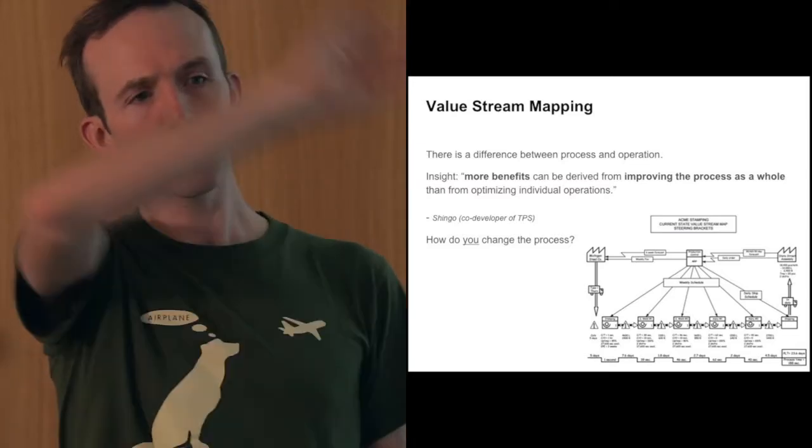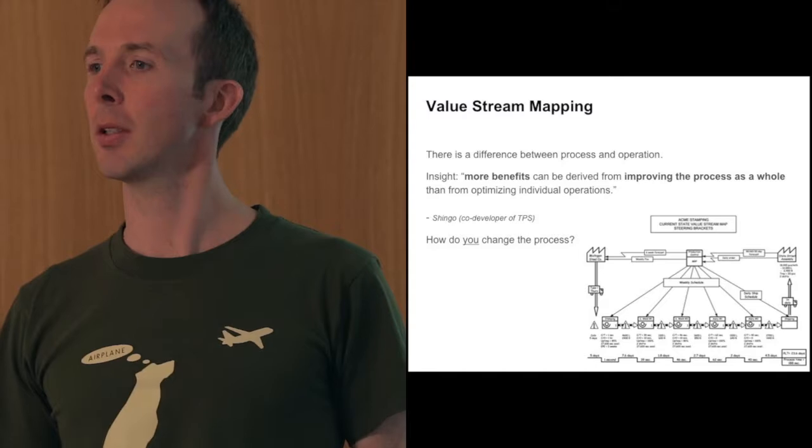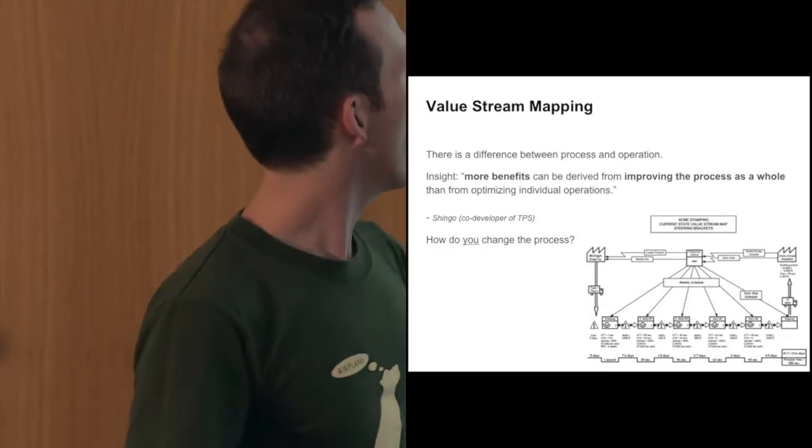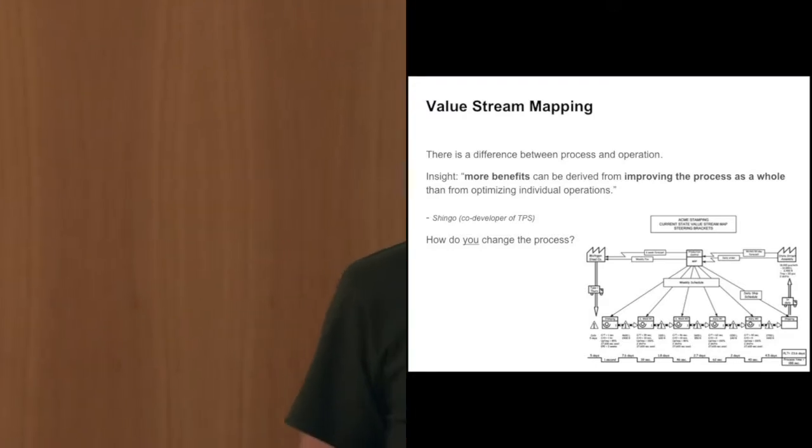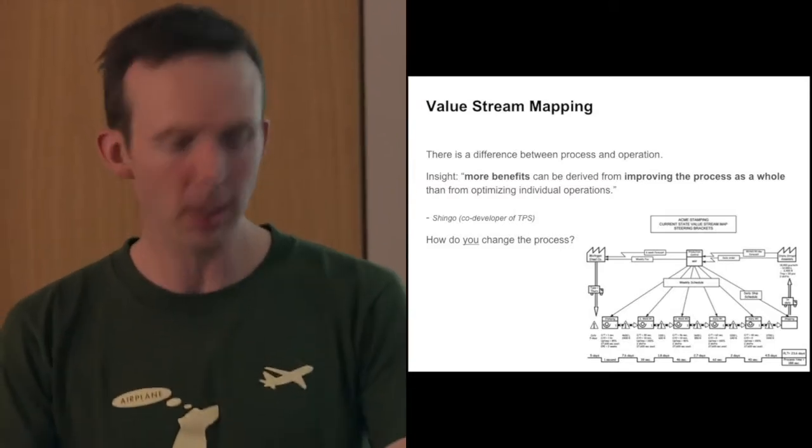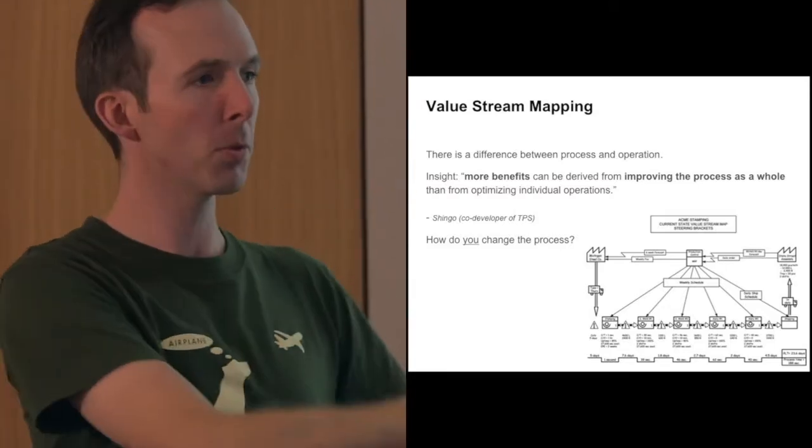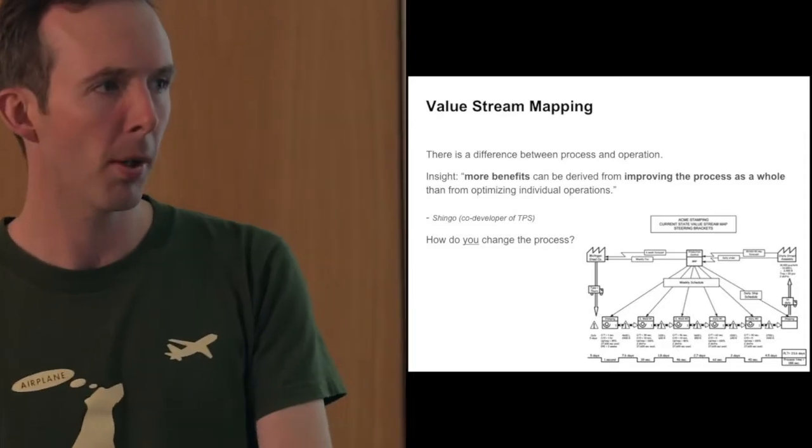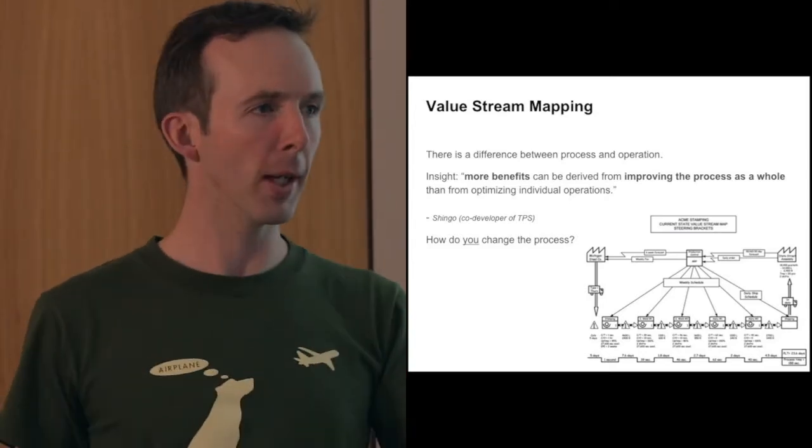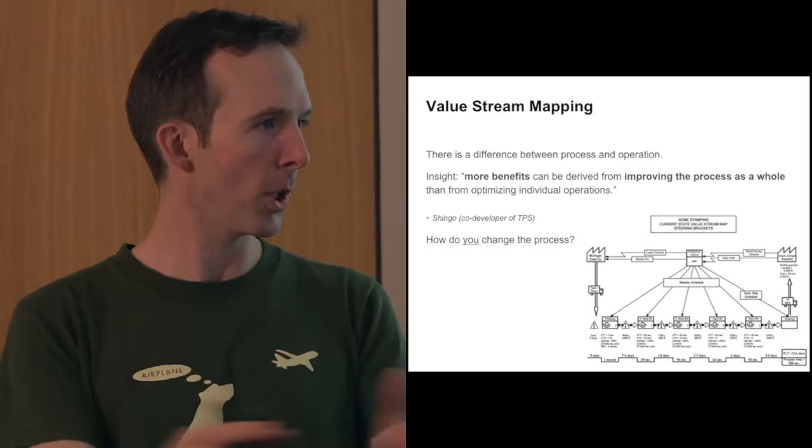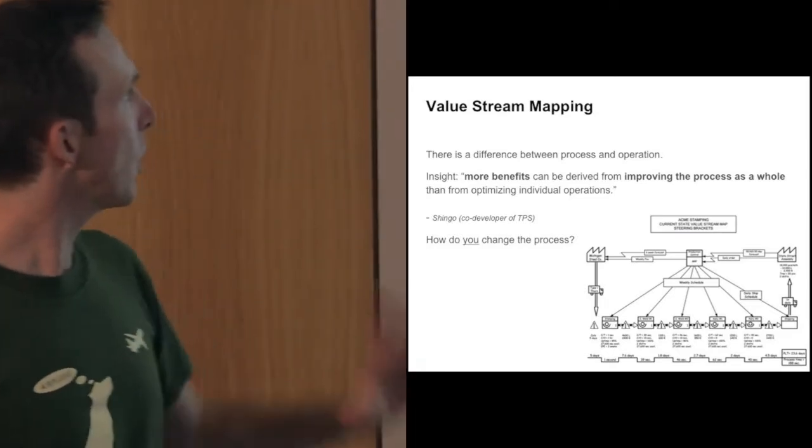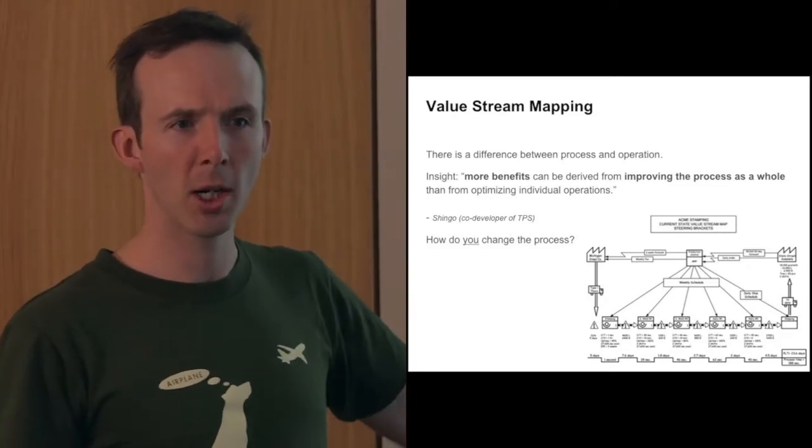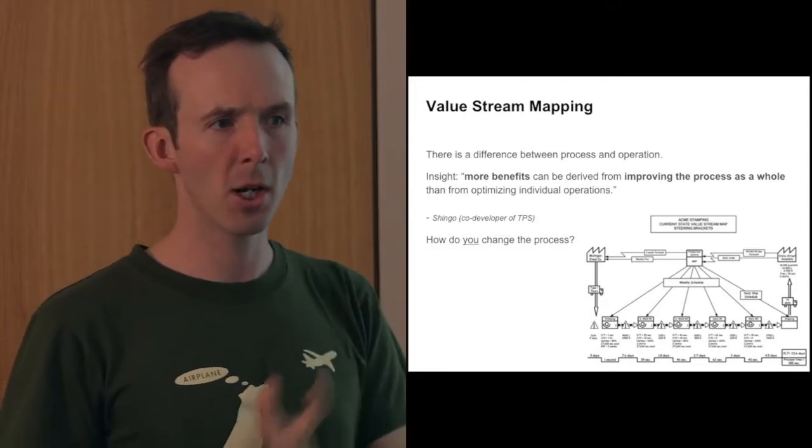This is a very simple idea: if we look at the whole process, we generally find more ways to make things better than by making each step better. The difference between process and operation - operation is I'm the operator at the machine doing the job. The process is how things move through the path. A lot of the time we focus on making the operator better at their job, rather than should we be doing that earlier or later, or could we remove that step completely? So what we do in value stream mapping is map out the process so we can think about how we change the process.